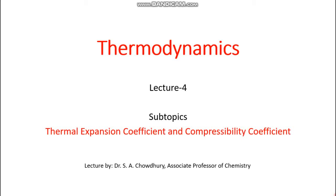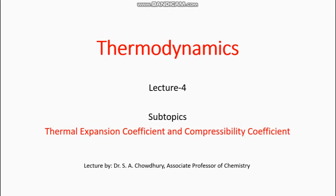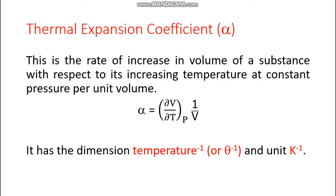Hello everyone. The subtopics of the fourth lecture of thermodynamics are thermal expansion coefficient and compressibility coefficient. The thermal expansion coefficient is denoted as alpha, and is defined as the rate of change in volume with respect to temperature per unit volume, because volume and temperature are directly proportional to each other.